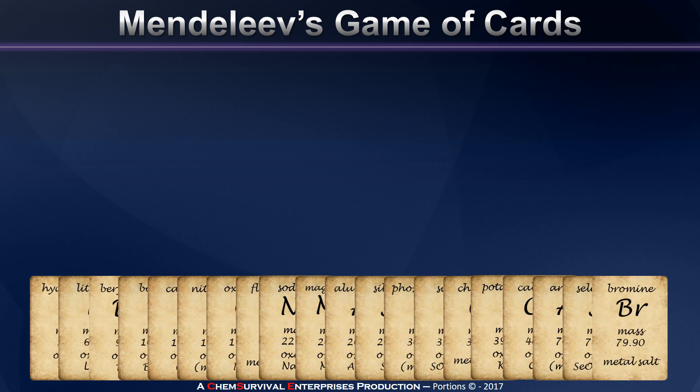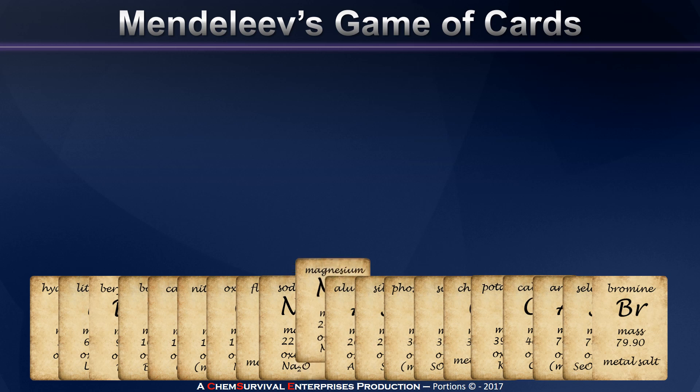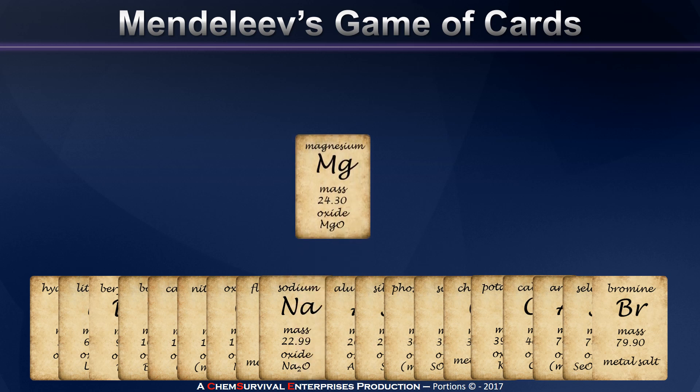Mendeleev went about his search for order among the elements using a deck of cards that he'd created for himself, in which each card represents a different known element of his day. Here in my example I have just a few. On each card he also included some physical information about that element — in my example I have the atomic mass of the element and the ratio in which it combines with oxygen atoms, both of which were known in Mendeleev's time.